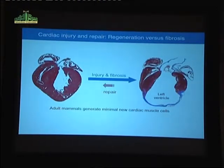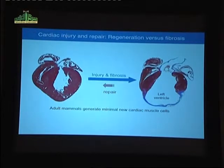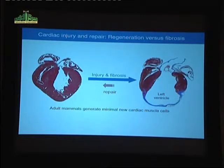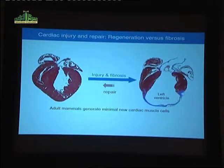Thousands of patients have been treated over the past decade in the United States and Europe with stem cell therapy to try to enhance function of the failing human heart. It's fair to say that all of those studies have failed — there's no evidence that injection of stem cells into the heart can give rise to new cardiac muscle cells. So it's time to take a step back and think about ways to leverage our understanding of developmental mechanisms as a strategy for generating new heart muscle.